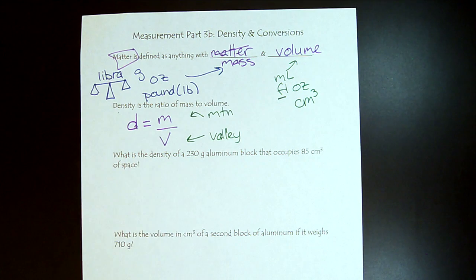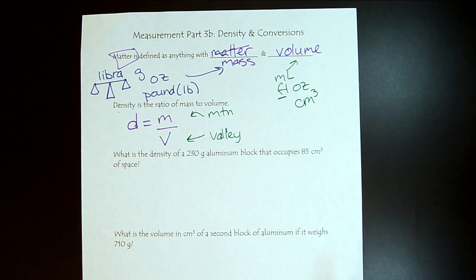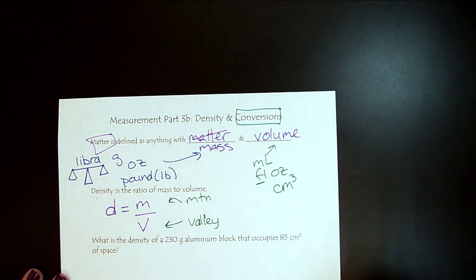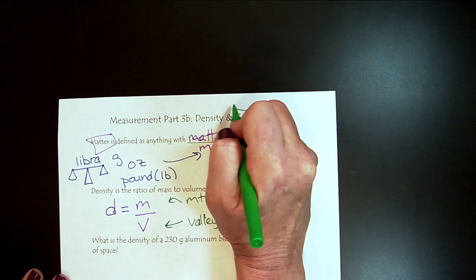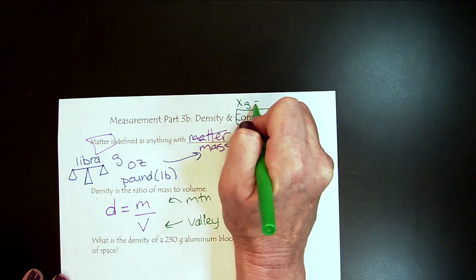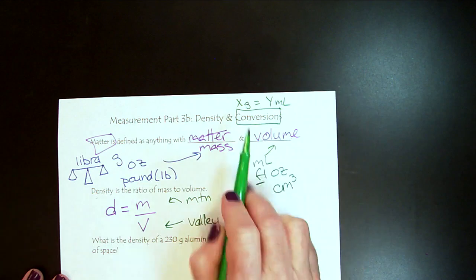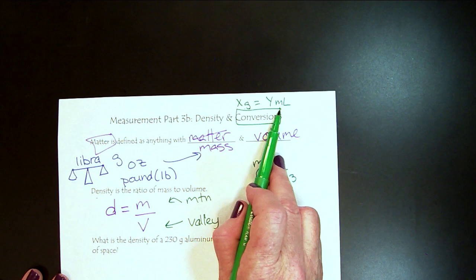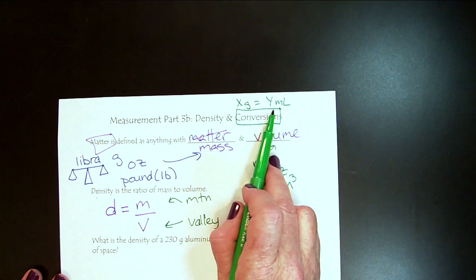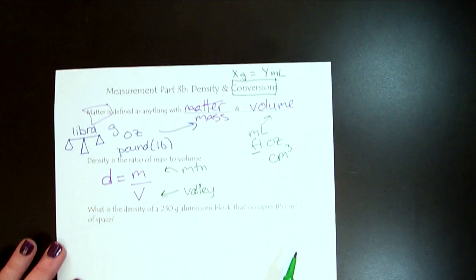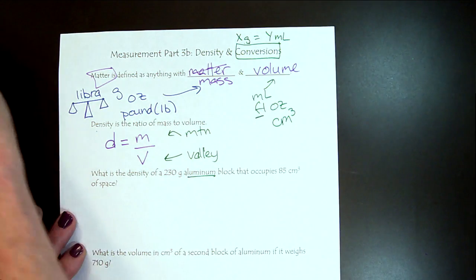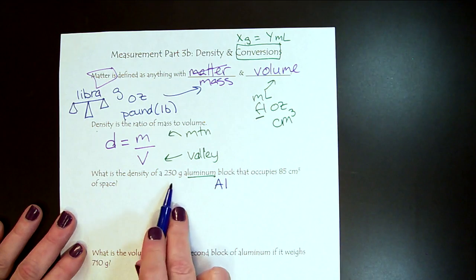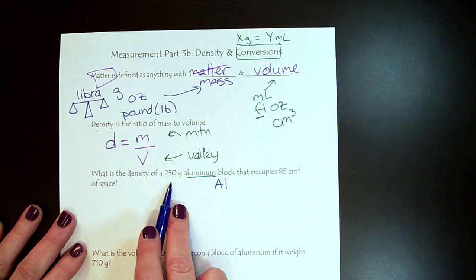So we want to be able to know the definition of density, however, when we're working with density, we really want to use it as a conversion factor. So anytime I say conversion factor, it means we're going to have something like X grams equals Y milliliters. So a conversion factor is where we've found a relationship between two things. So this would be an example of a density conversion factor. So let's practice with aluminum.